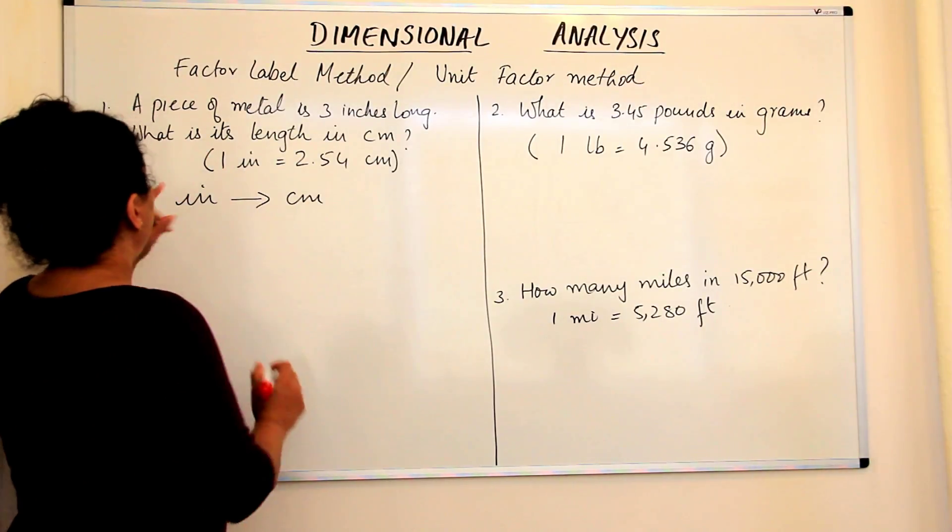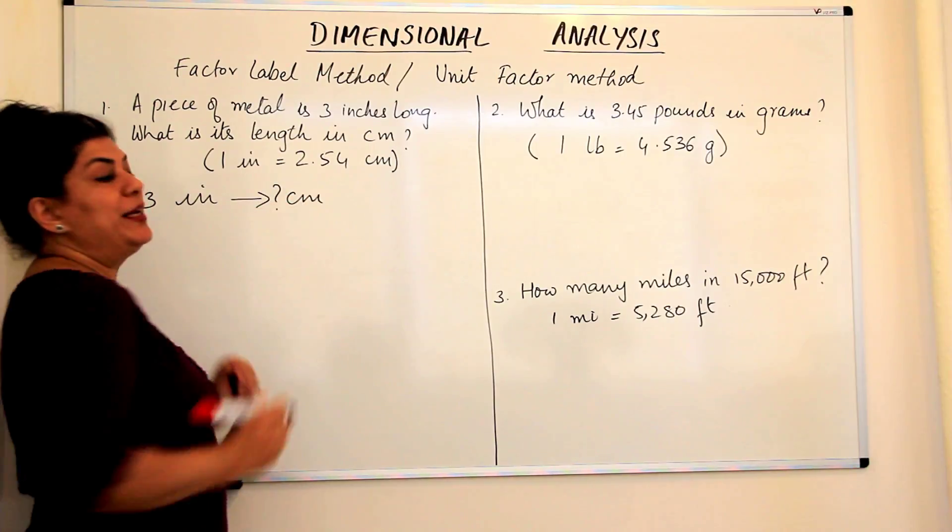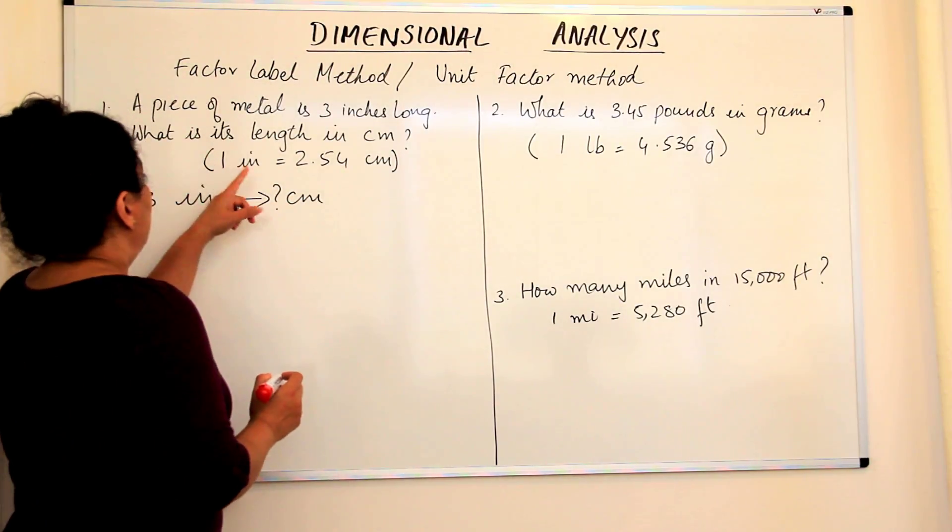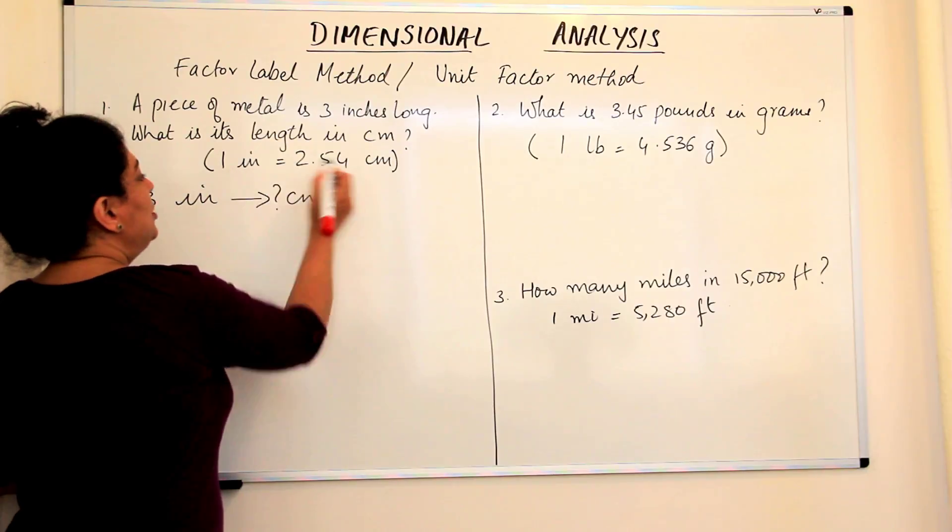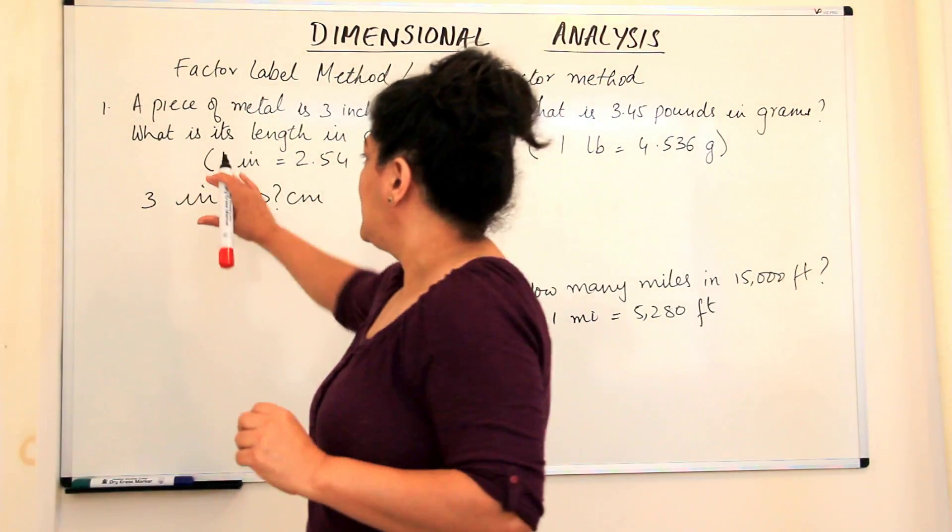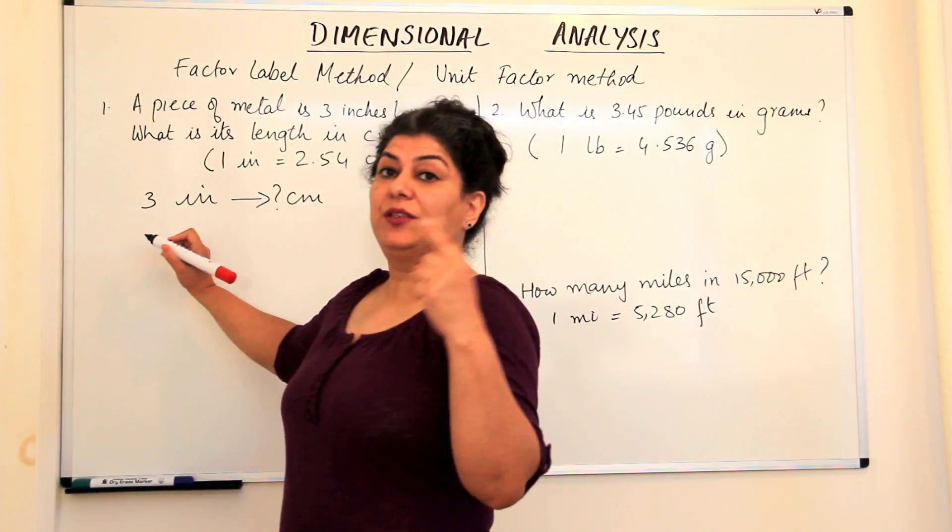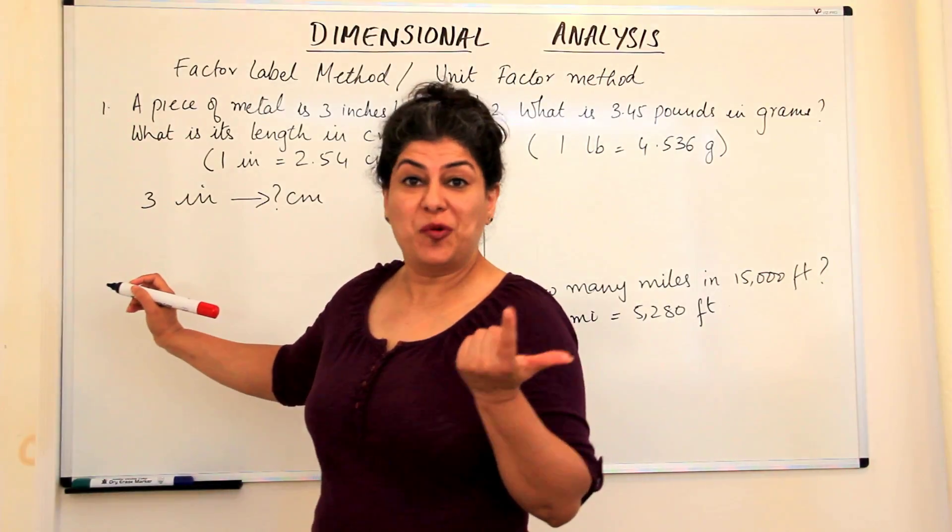How many inches do we have? We have three inches and we want to know how many centimeters is three inches. Now we know that one inch is 2.54 centimeters, so numerically this is equal to this, therefore the ratio of these should be 1. For example, 3 divided by 3 is 1.